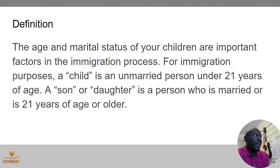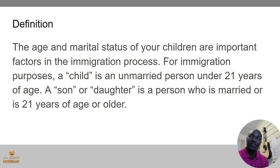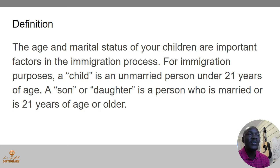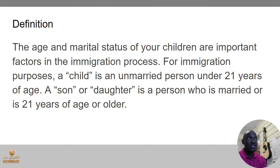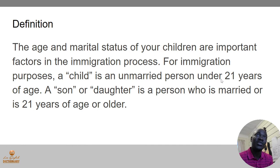First of all, they define it as: the age and marital status of your children are important factors in the immigration process. For immigration purposes, a child is an unmarried person under the age of 21 years, and a son or daughter is a person who is married or is 21 years of age or older. There are two classifications: son/daughter, and child — what determines this is being 21 years old and being married.